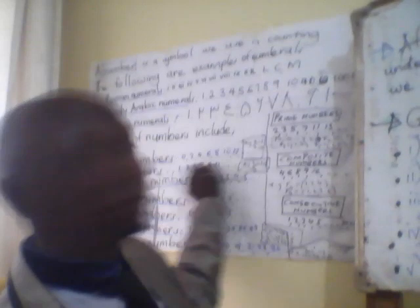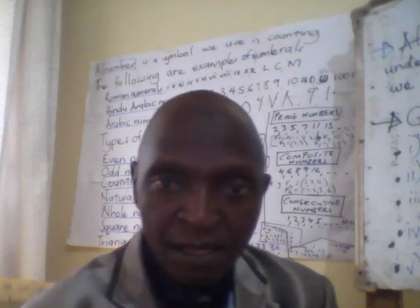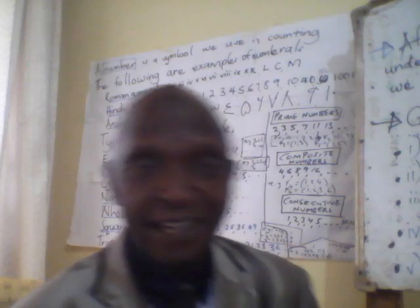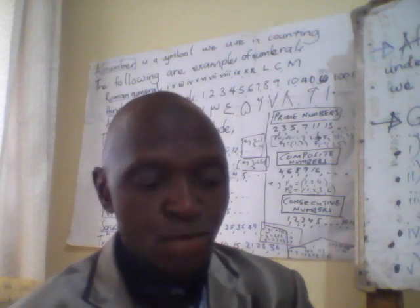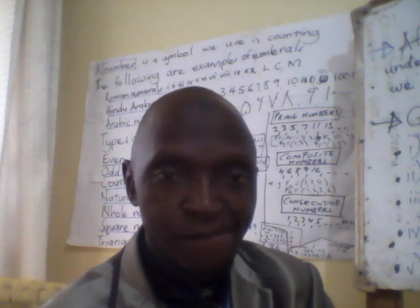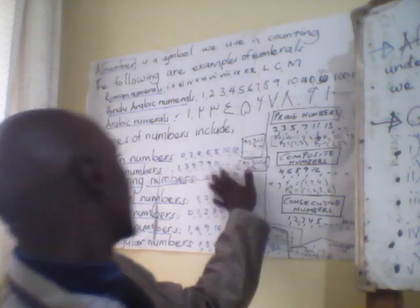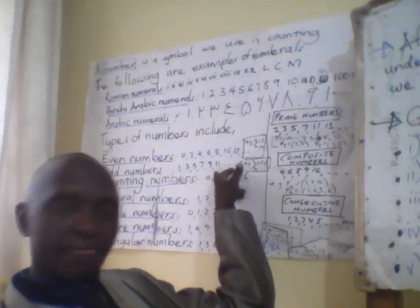The types of numbers we have: we have the even numbers. Even numbers are the numbers that when divided by two, you don't get a remainder. I've given some good examples as you can see here.